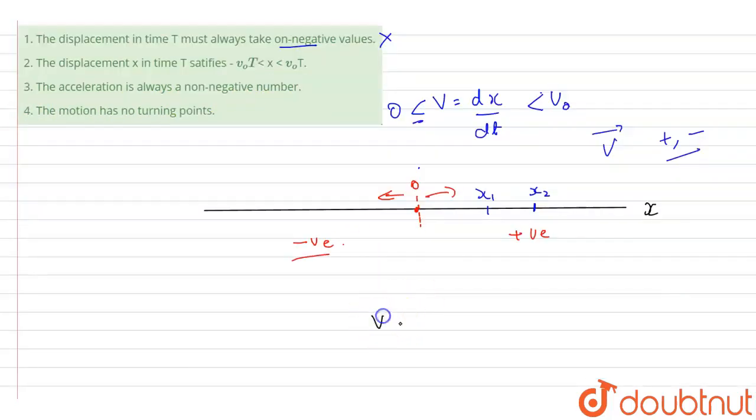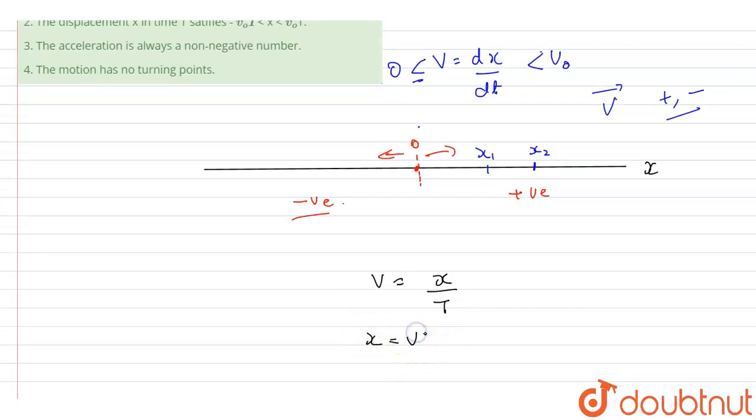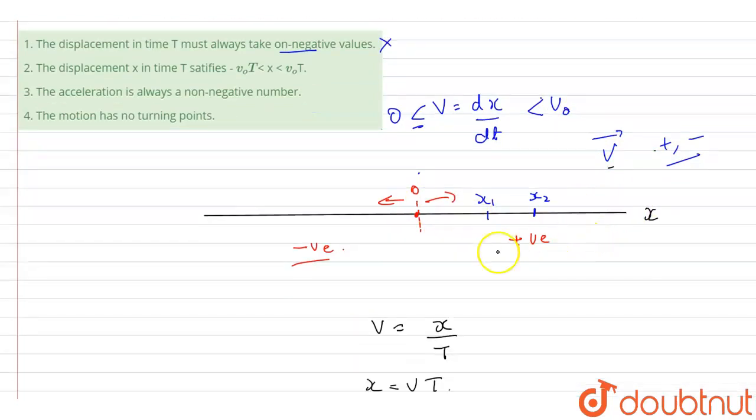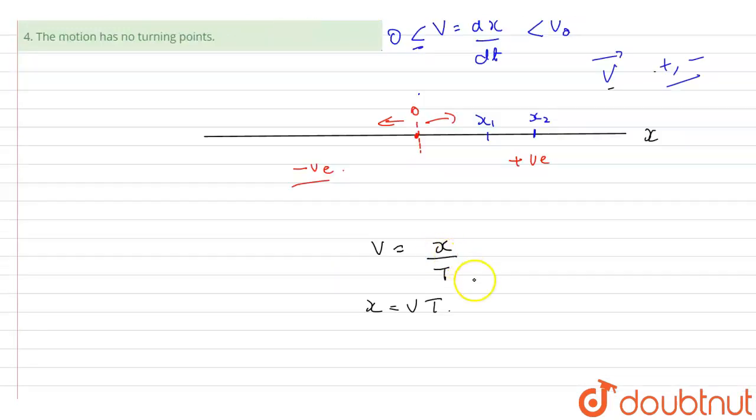Now we know that velocity is given as displacement upon time t. So from here displacement will be equal to velocity times t. And in the question we can see that the maximum limit to speed is v0, it cannot be greater than v0, but then as we discussed that velocity can be positive or negative depending upon the direction. So here we can see that the maximum v0 value can go up to positive x axis and also towards the negative x axis.